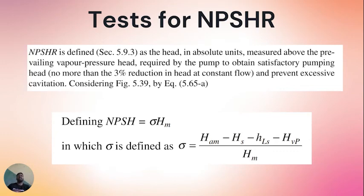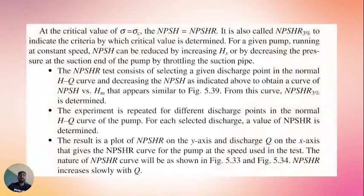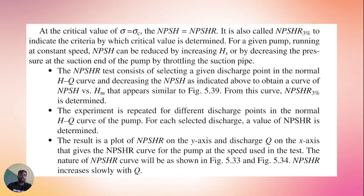NPSHR is defined as the head in absolute units measured above the prevailing vapor pressure head required by the pump to obtain satisfactory pumping — not more than three percent reduction in head at constant flow — and to prevent excessive cavitation. At the critical value of sigma, NPSH equals NPSHR, also called NPSH3 to indicate the criteria by which the critical value is determined. For a given pump at constant speed, NPSH can be reduced by increasing Hs or by decreasing pressure at the suction end by throttling the suction pipe. The NPSHR test involves selecting a discharge point on the normal HQ curve and decreasing NPSH to obtain a curve of NPSH versus head, from which NPSH at three percent reduction is determined. Thank you.